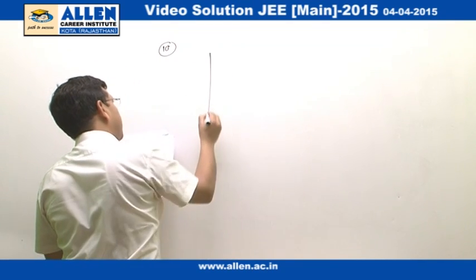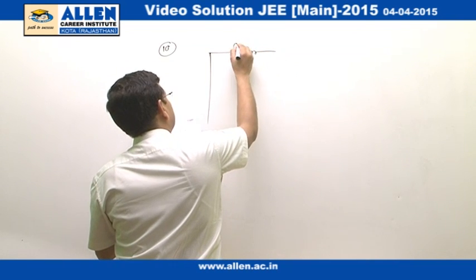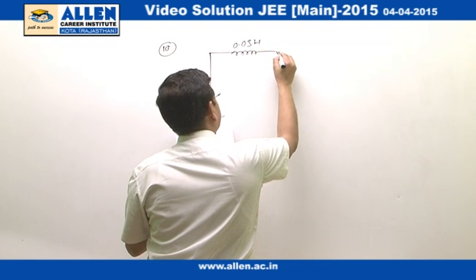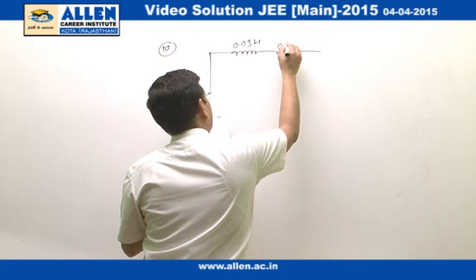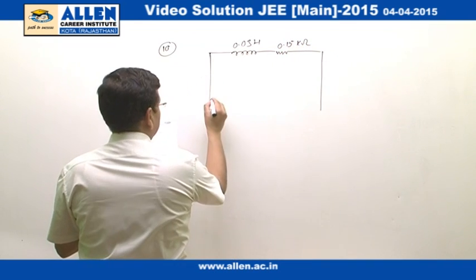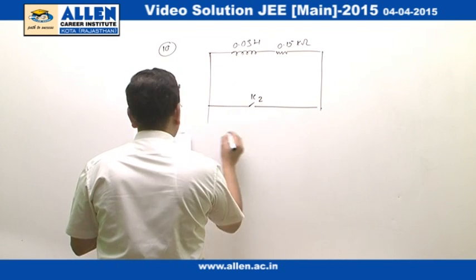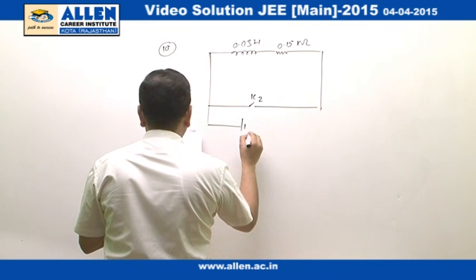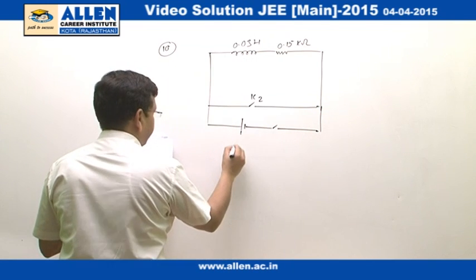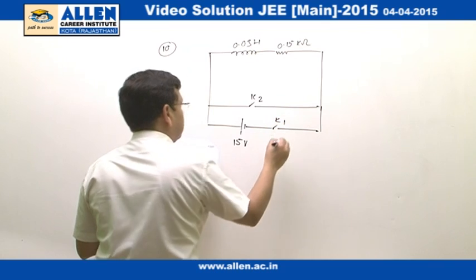The circuit looks like this. We have an inductor of inductance 0.03 and we have a resistor of resistance 0.15 kilo ohm and we have here a switch K2 and another switch K1 which connects a battery of EMF 15 volt with this circuit.